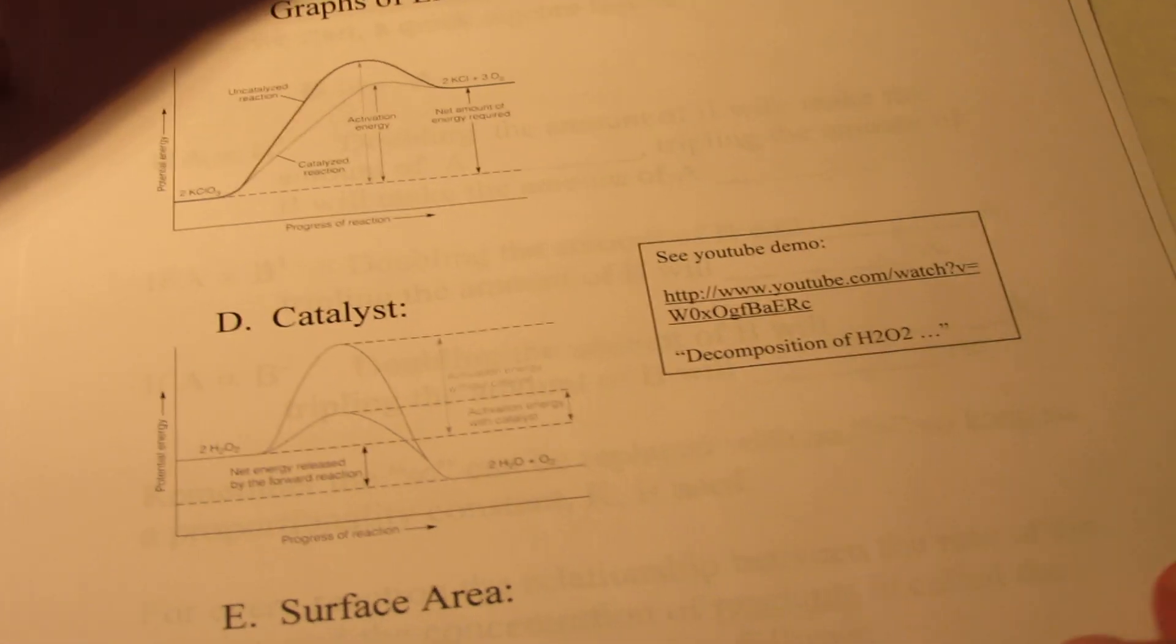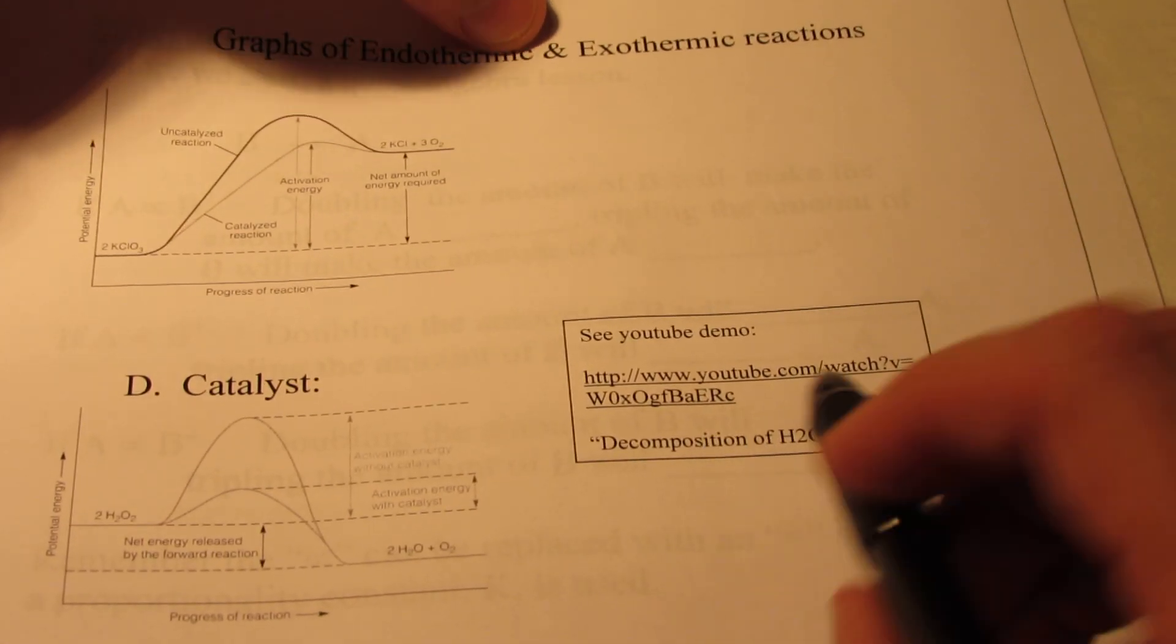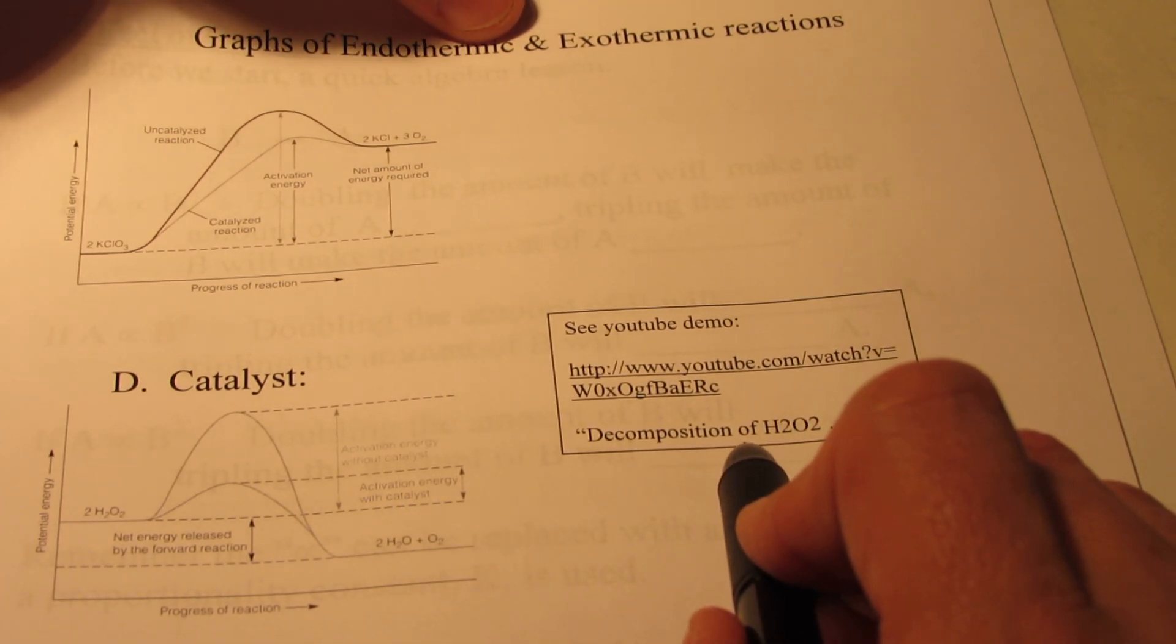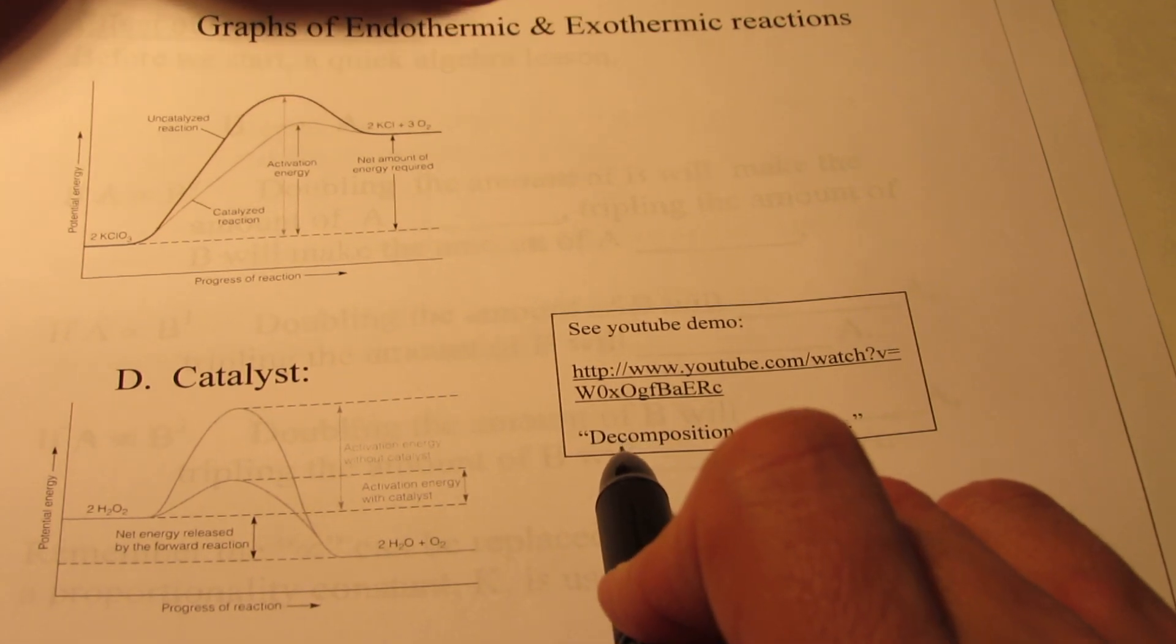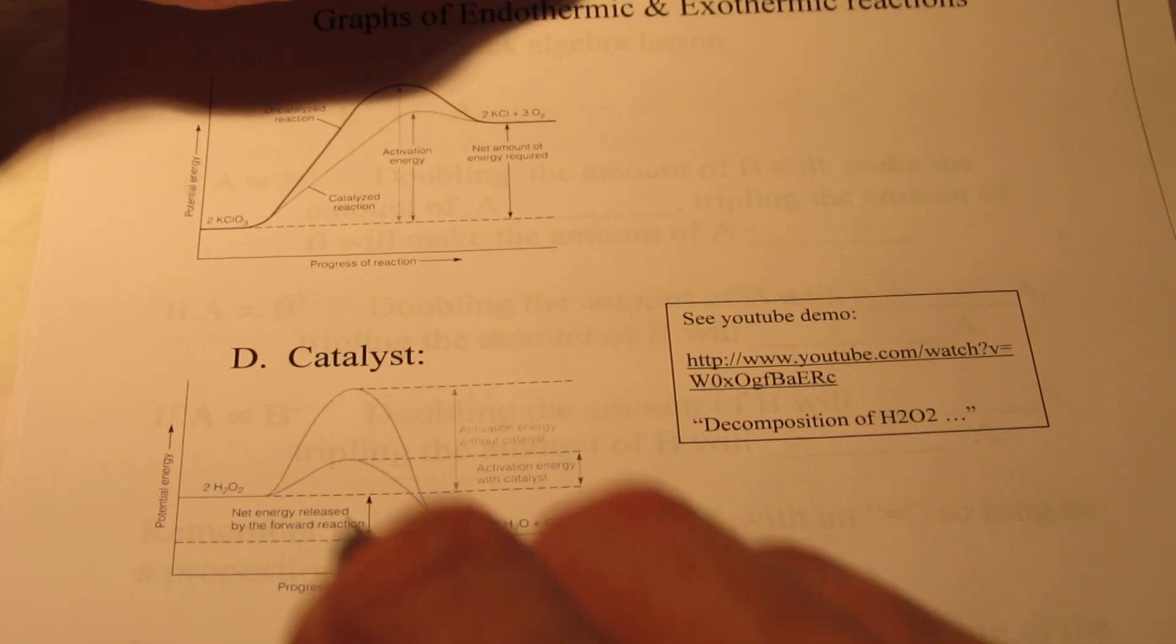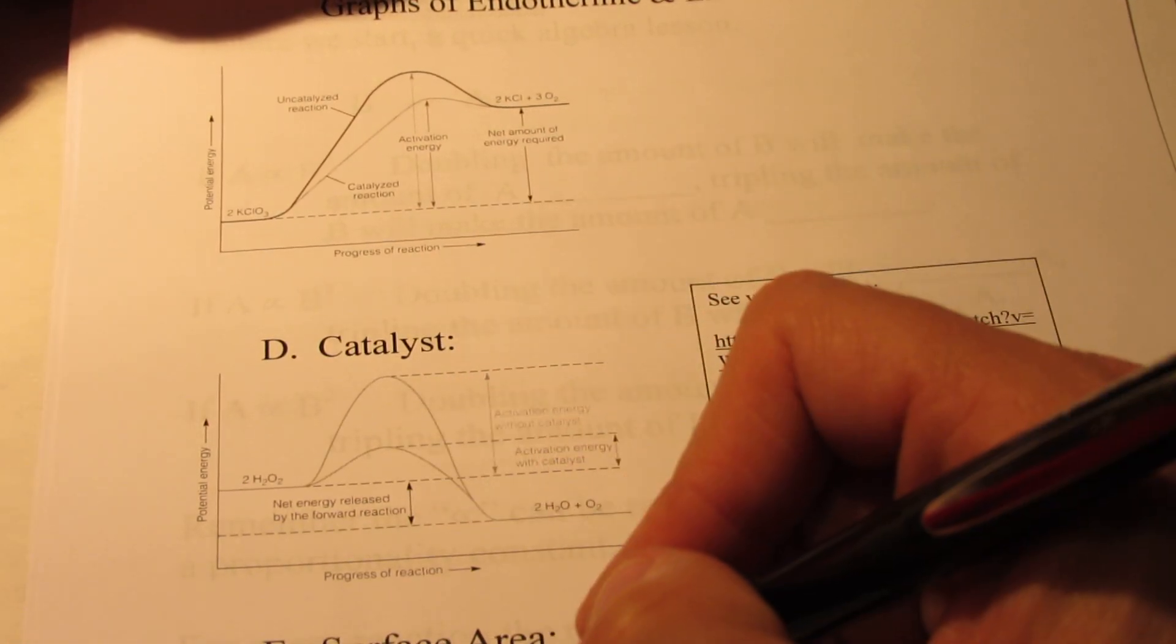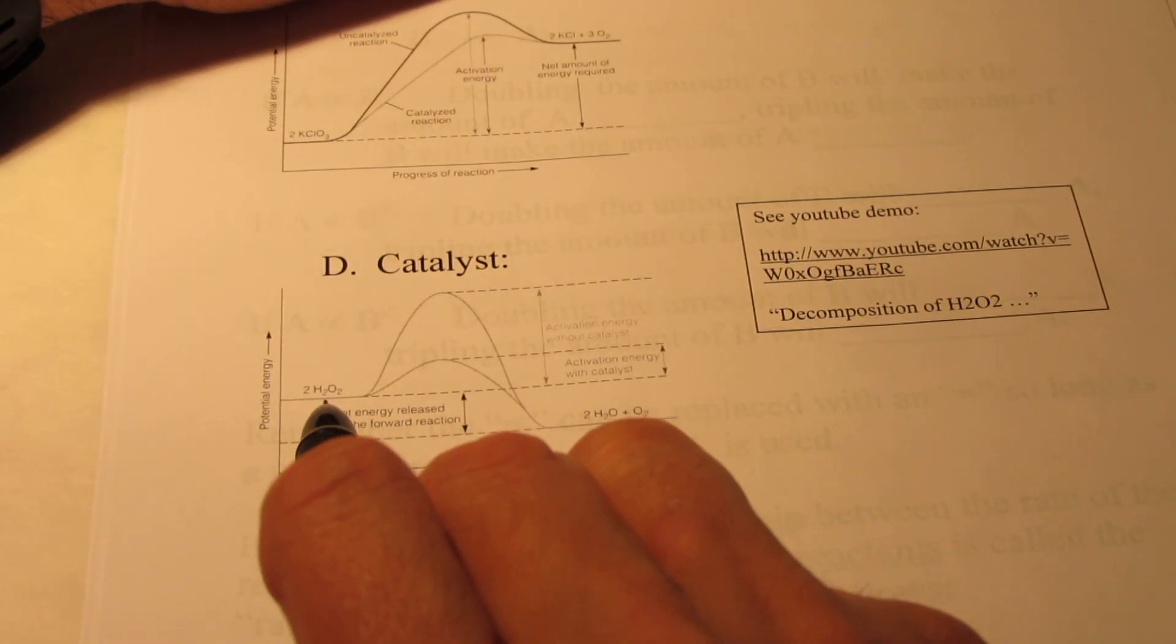Letter D is the use of a catalyst. There's a demo on our YouTube channel called Decomposition of H2O2. Take a look at that demo, and that will help illustrate the role of a catalyst in a chemical reaction. For right now, let me just say that the catalyst decreases the activation energy of a reaction. This is hydrogen peroxide. When it decomposes, it decomposes into water and oxygen gas.